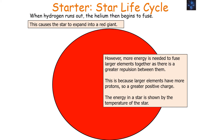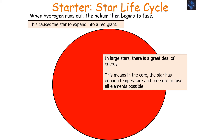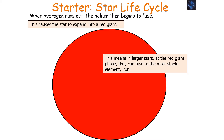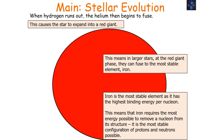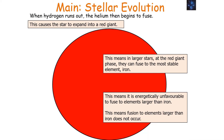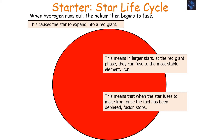The energy in a star is shown by its temperature. In larger stars, there's a great deal of energy because they have a very high temperature. In the core, the star has enough temperature and pressure to fuse all elements possible. In larger stars at the red giant phase, they can fuse all the way to the most stable element — iron. Iron is the most stable element, as it has the largest binding energy per nucleon, meaning it requires the most energy to remove a nucleon from its structure. It is energetically unfavourable to fuse elements larger than iron, so fusion stops when iron fuel is depleted.